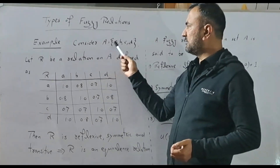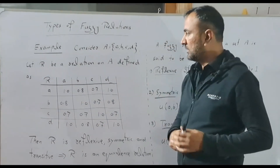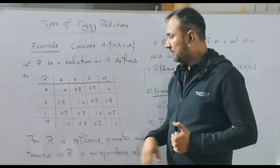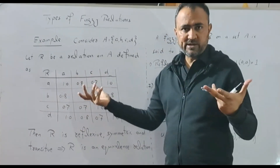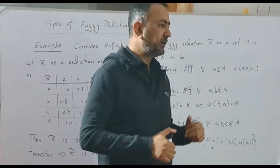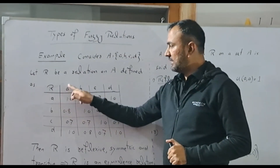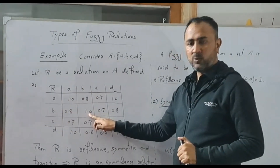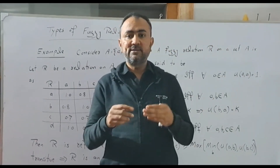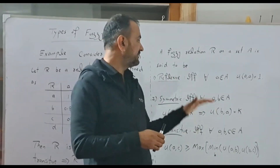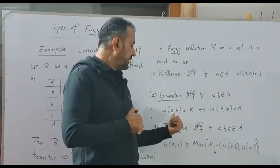Consider a non-empty set A = {A, B, C, D}. Let R be a relation on A defined by a given table of membership values for all pairs. We check whether it is reflexive, symmetric, and transitive. For reflexivity, we require μ(a, a) = 1 for all a ∈ A. Checking: μ(A,A) = 1, μ(B,B) = 1, μ(C,C) = 1, μ(D,D) = 1. So the given relation is reflexive.